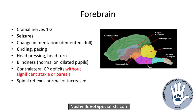When it comes to the forebrain, one of the hallmarks is an animal with a mentation change — they may be dulled or demented. Typically these animals have a normal gait and are not significantly ataxic or paretic. They may be circling or pacing, and can have visual deficits, but no other cranial nerves will be affected if we're truly dealing with a forebrain lesion.